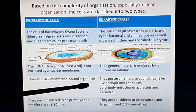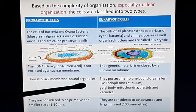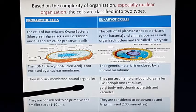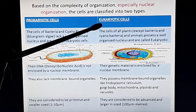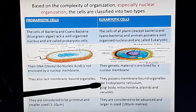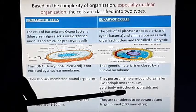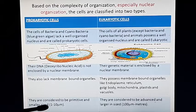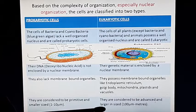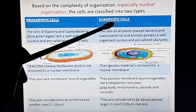Prokaryotic cells also do not have membrane-bound organelles. Organelles are organs within the cell that perform specific functions, and each organelle is bounded by a membrane. In prokaryotic cells, membrane-bound organelles are absent. In eukaryotic cells, all membrane-bound organelles are present — such as endoplasmic reticulum, Golgi body, mitochondria, plastids, and vacuoles. Because prokaryotic cells are primitive, their size is small: 1 to 10 micrometers. Eukaryotic cells are larger, ranging from 100 micrometers to several meters.